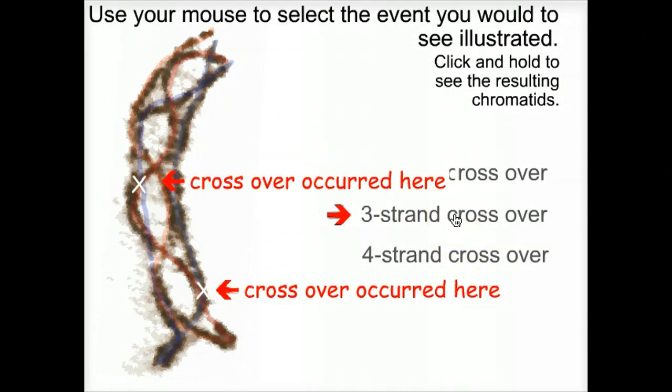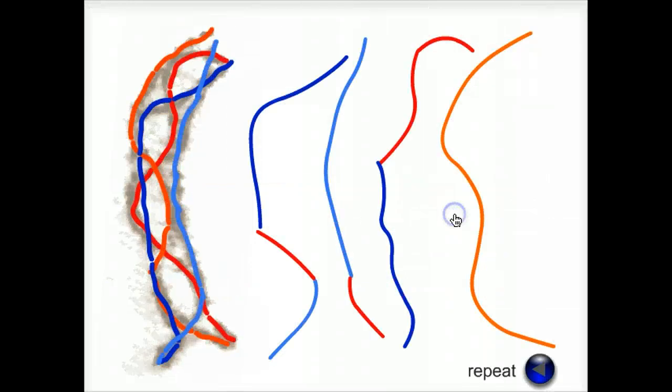These two positions indicate three strand crossovers. That is, three different chromosomes are involved. We can see again that we've shuffled parts of each chromosome.